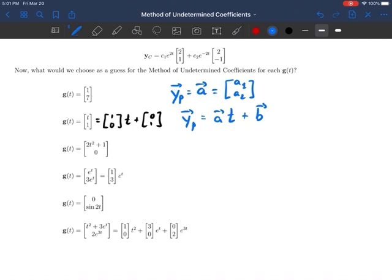All right, hopefully that makes sense. You don't have to break it down like I did in the black ink there, but it's sometimes helpful just for envisioning things. All right, similarly, if g(t) is [2t² + 1; 0], then what would our complementary solution be? Well, it would be a second degree polynomial, but with vector coefficients. So then we would have a t² plus b t plus c.